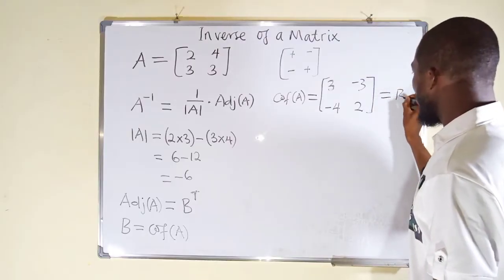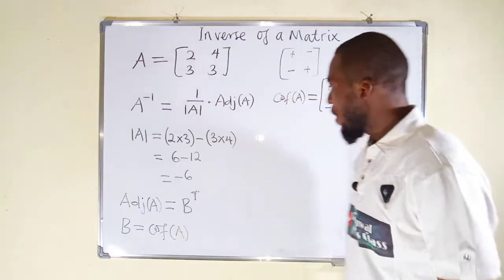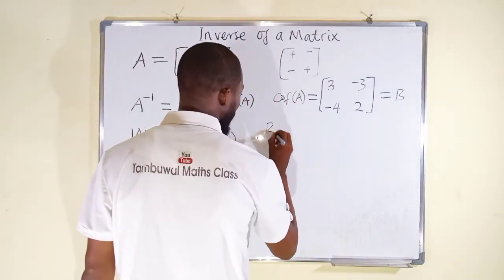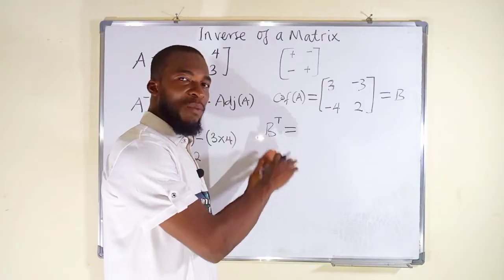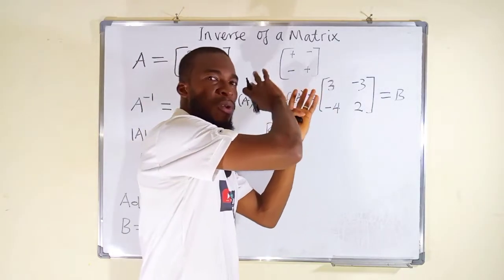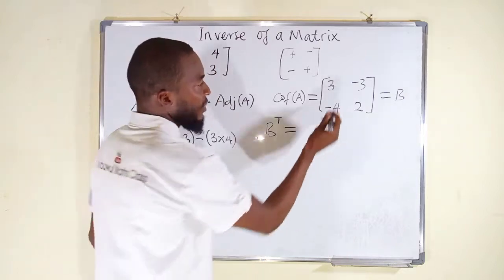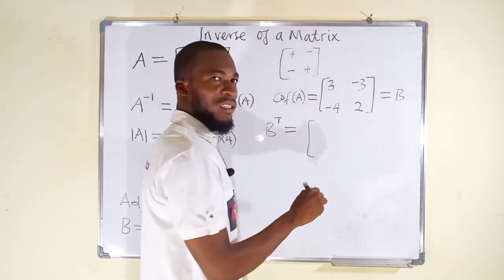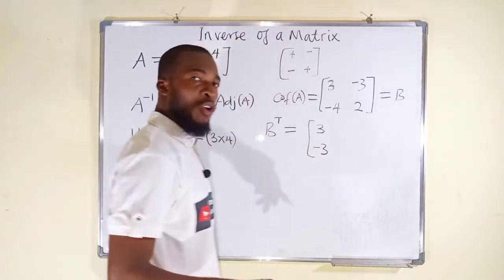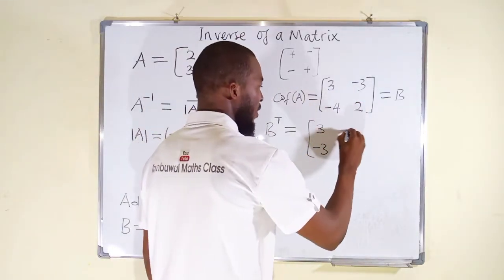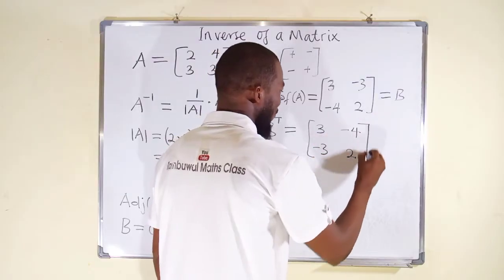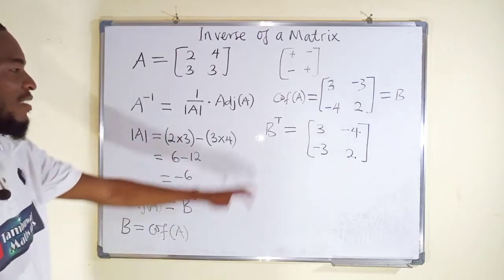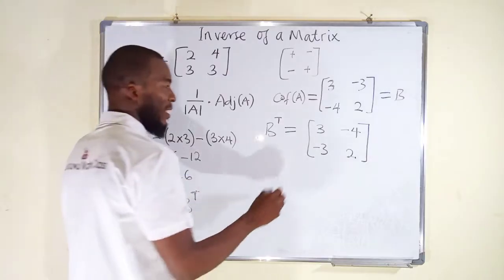Next, we are going to find B transpose. To obtain B transpose, we transform all the rows into columns. So the first row becomes the first column: 3, negative 3. And the second row becomes the second column: negative 4 and 2. So this is B transpose, and this B transpose is said to be the adjoint of matrix A.